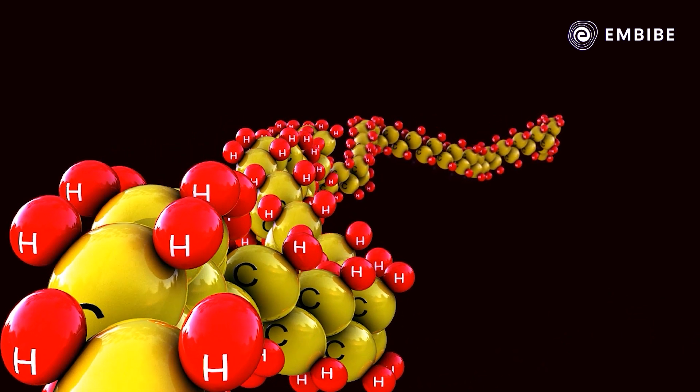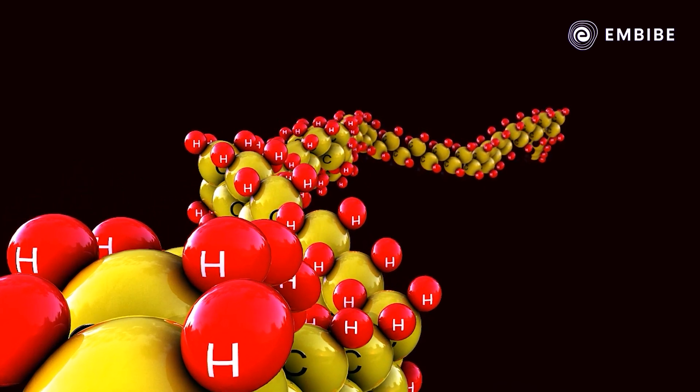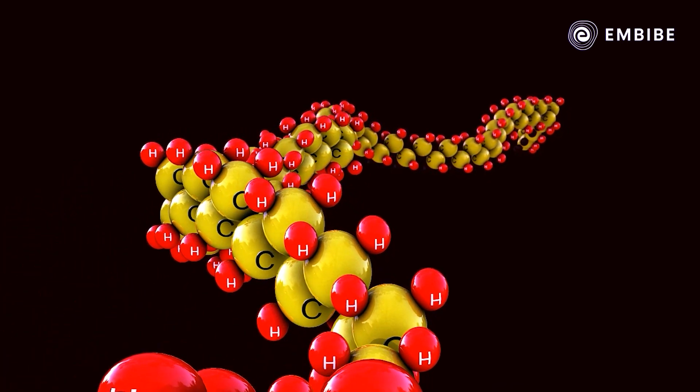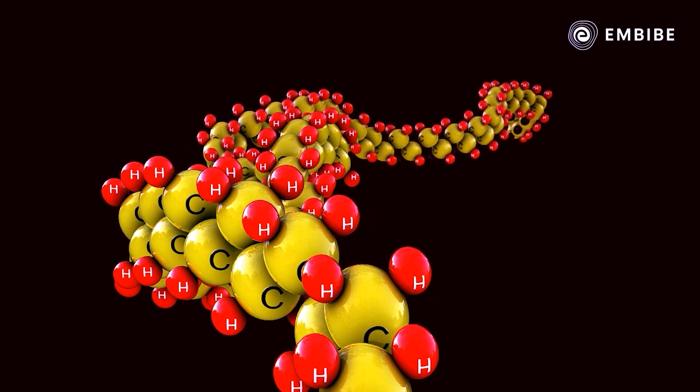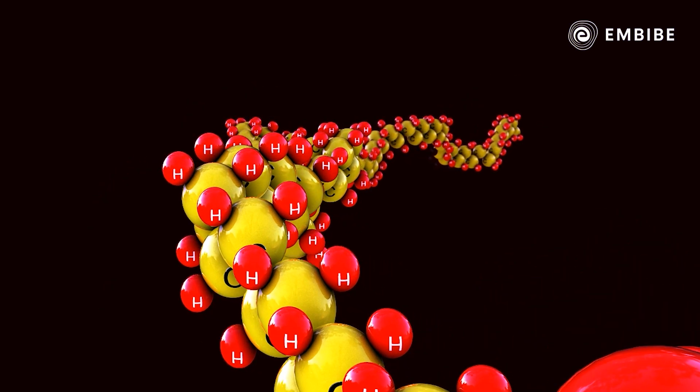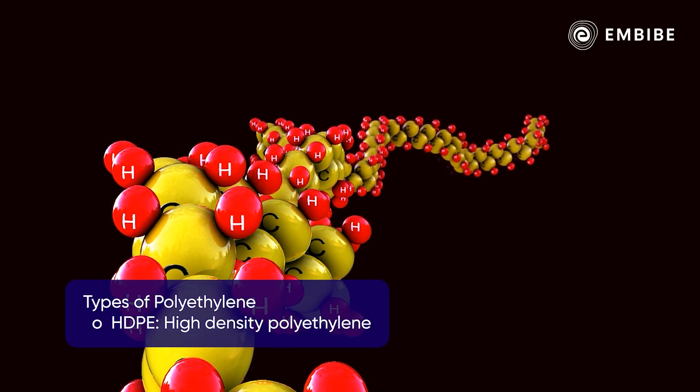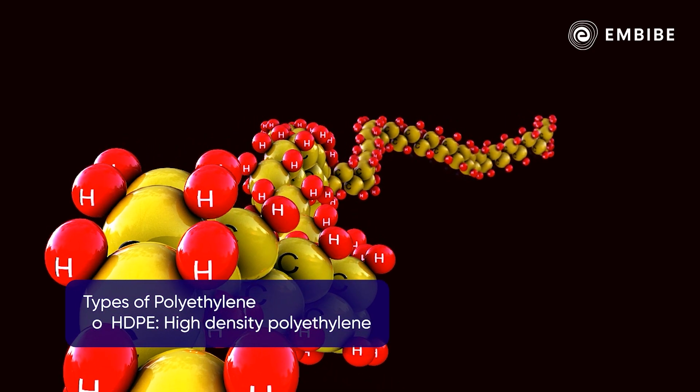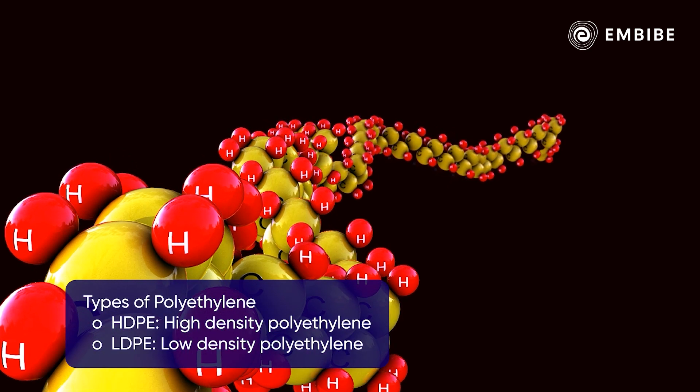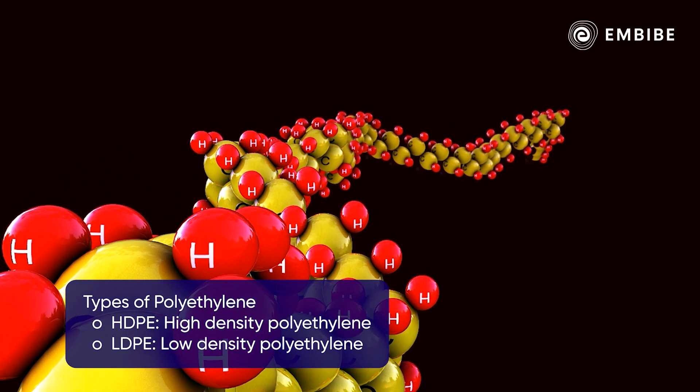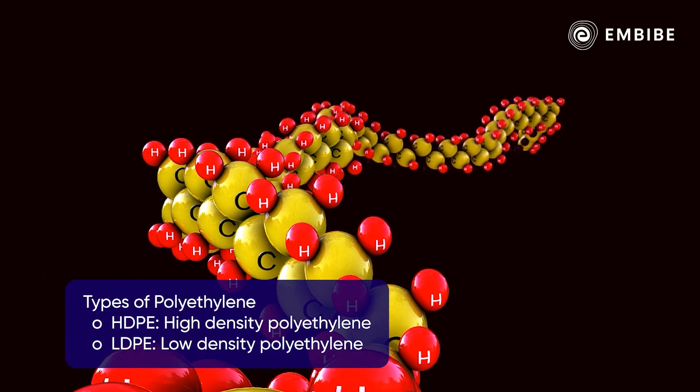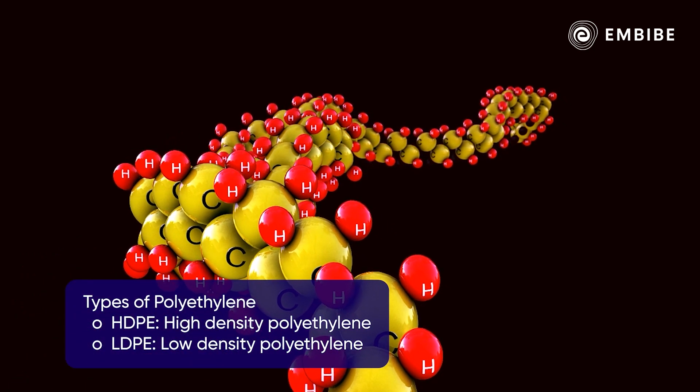This enables the manufacturers to obtain its different types. Let us study the two major types of polythene: HDPE (high-density polyethylene) and LDPE (low-density polyethylene), both of which involve polymerization of a simple unit, ethene.